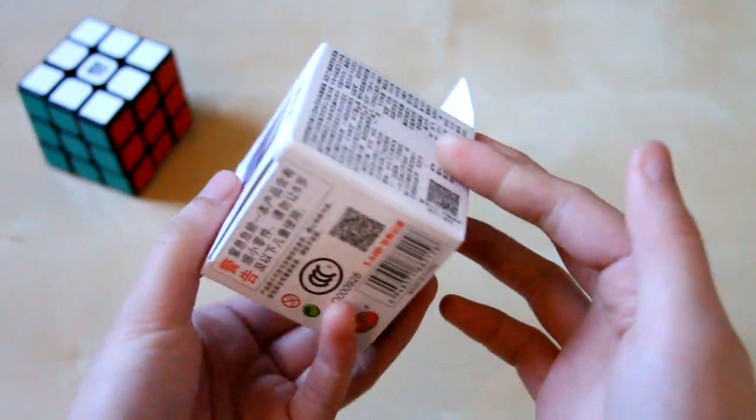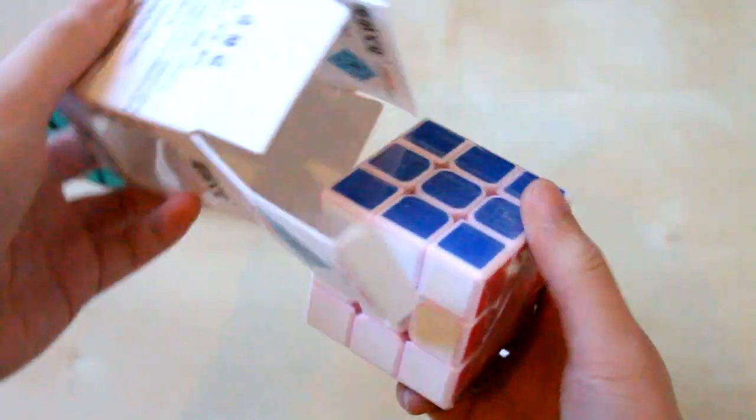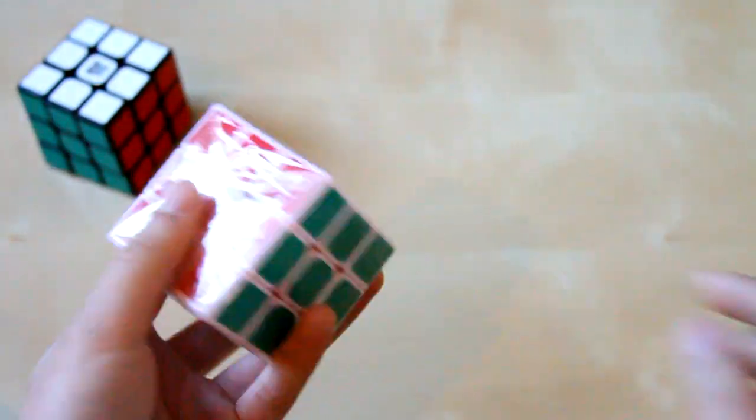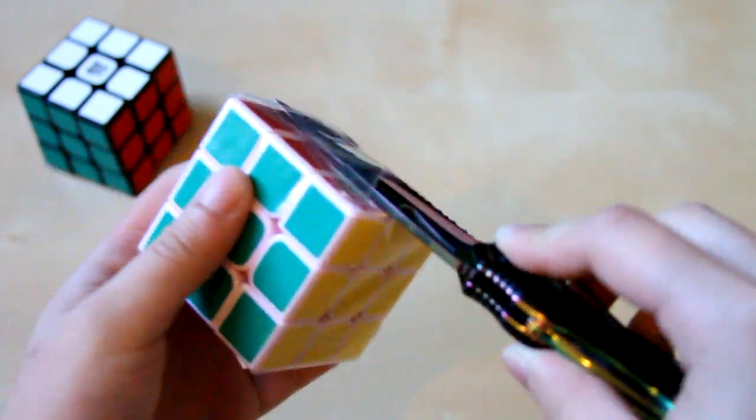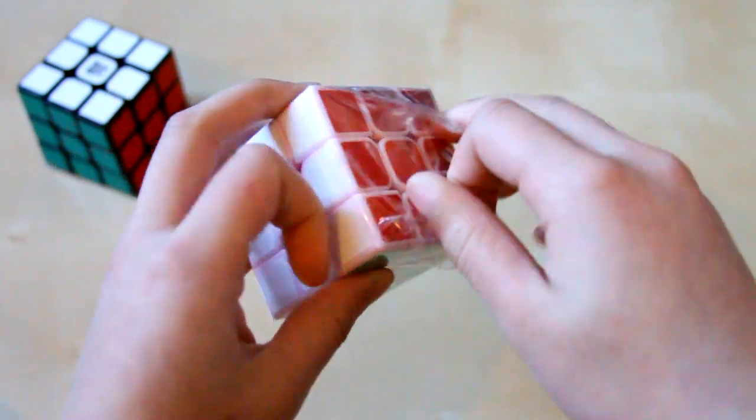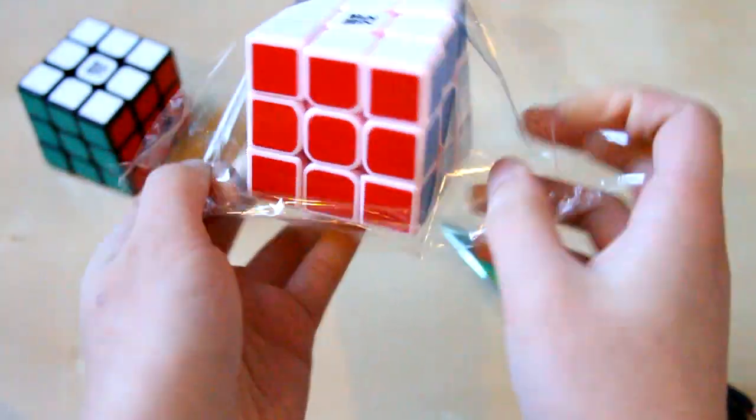I decided to get this one in pink because from videos I've seen, the new colored Moyu cubes seem to perform a little bit better than the typical black and white cubes. I was curious to see if this was actually true. It sounds like it uses a softer plastic. It doesn't sound as crispy.